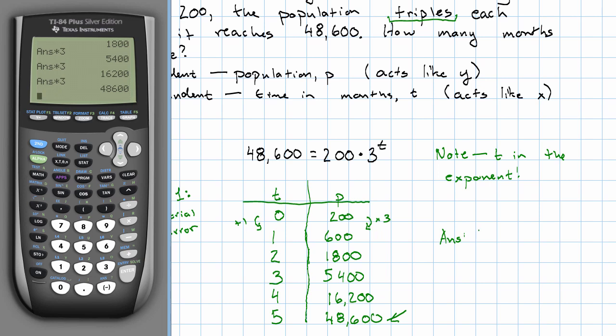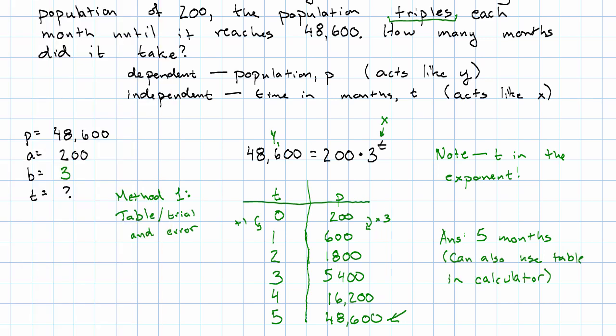We could also use our calculator's table feature, putting our variable in as x and having the output in y1. We could say 200 times 3 to the x, look at the table. And here we see y1 is 48,600 when x is 5. This table in the calculator is the same as the table that we made on paper. So that works just fine when our answer is a small whole number.